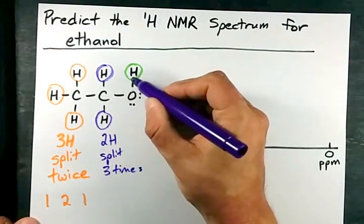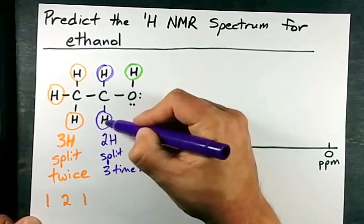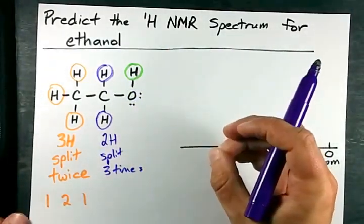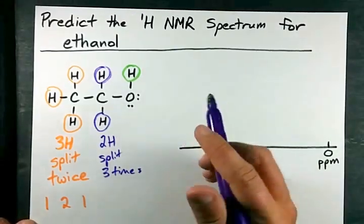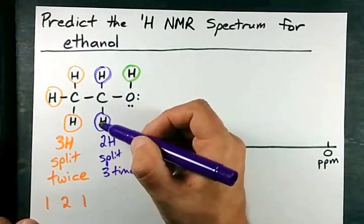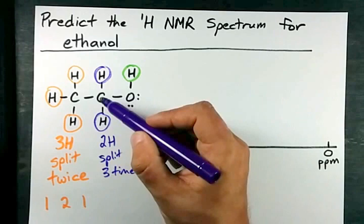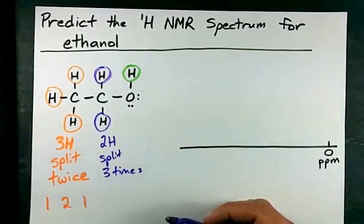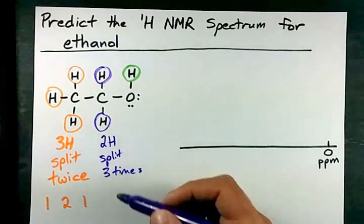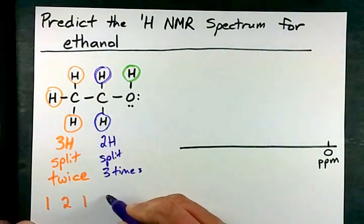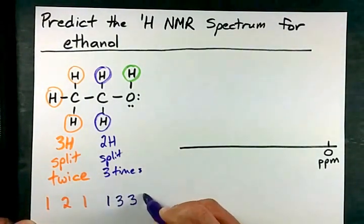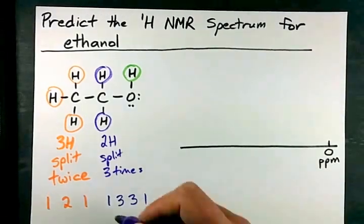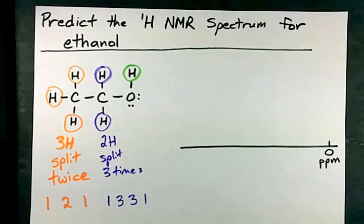That's why I say only look at carbons that are adjacent to the carbon that your hydrogens are attached to. According to Pascal's triangle, when something is split three times, it goes into a one-three-three-one pattern. We'll keep that in mind when we're drawing the high resolution spectrum.